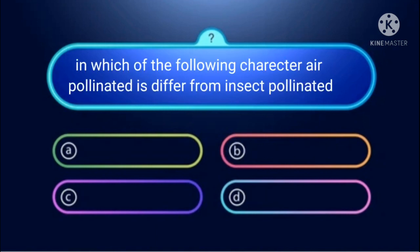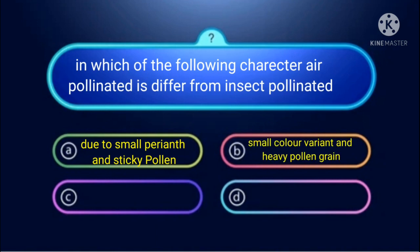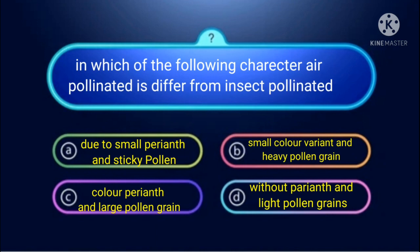Next question: In which of the following characters does wind-pollinated differ from insect-pollinated? The key character of wind-pollinated plants is light pollen grains. Wind-pollinated plants also lack colorful petals and have no nectar, as these features are not needed to attract insects.